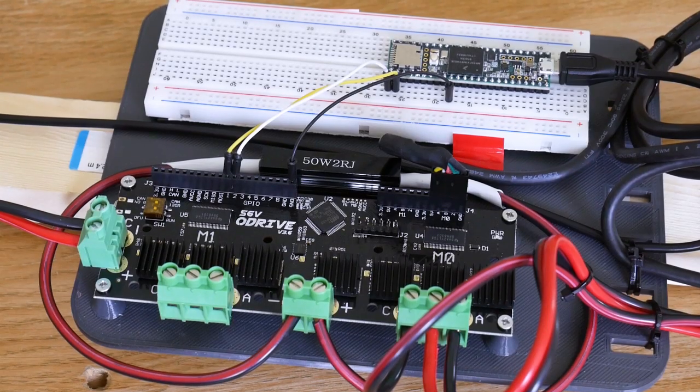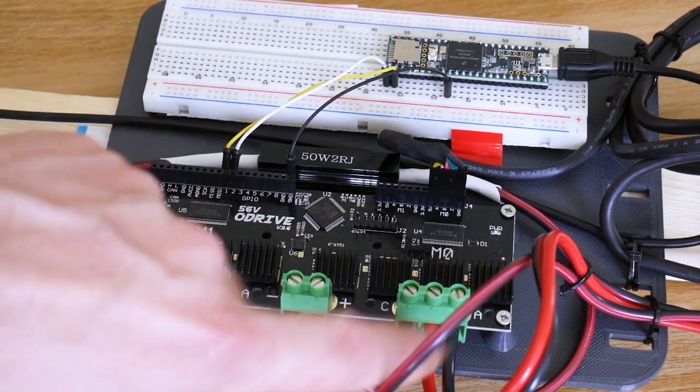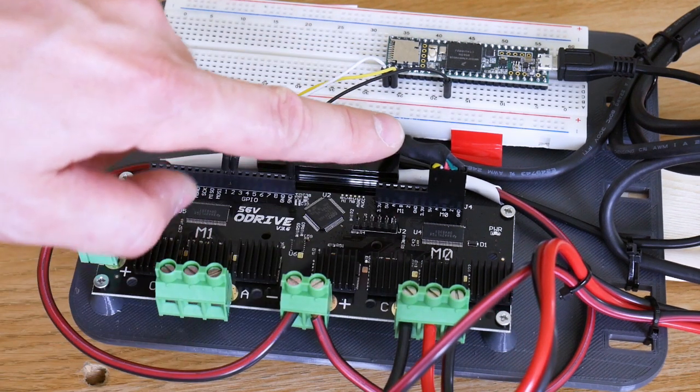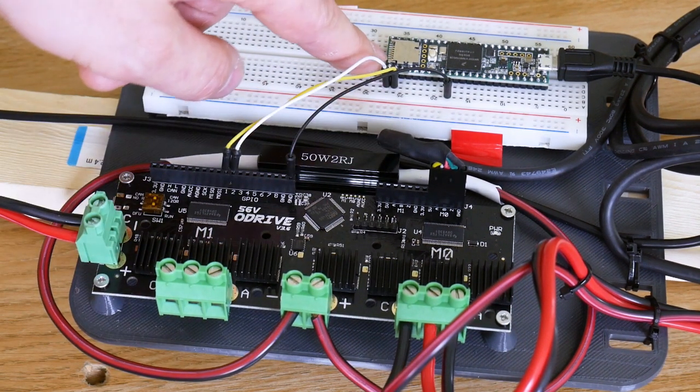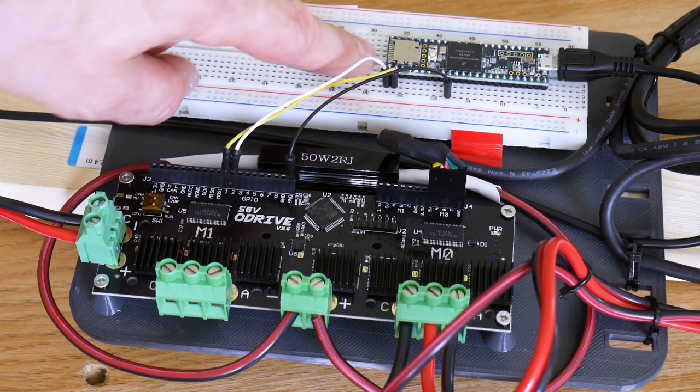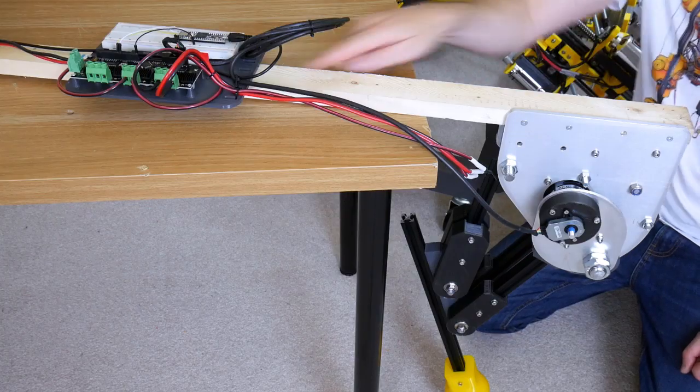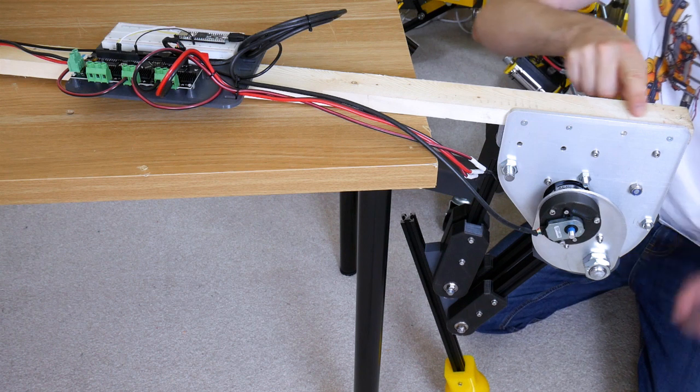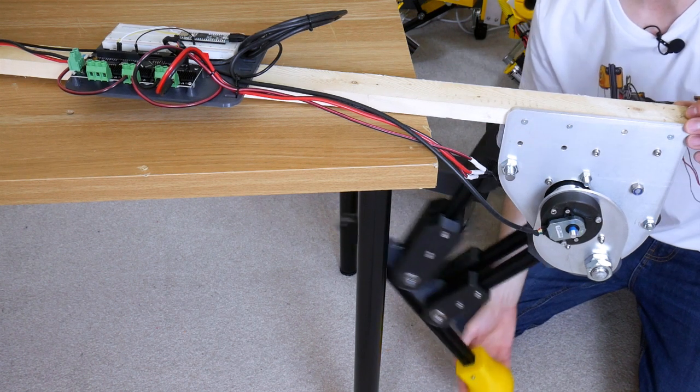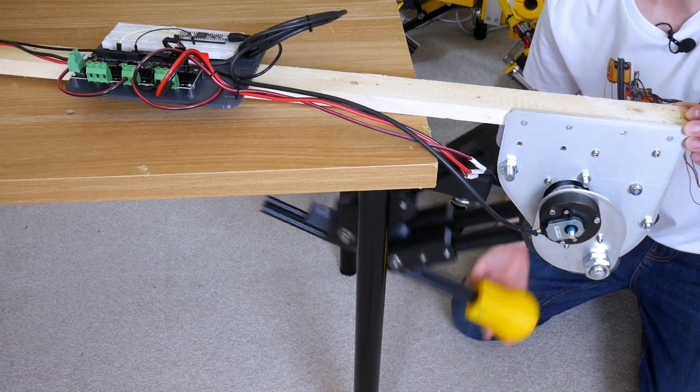To control the leg we're using an ODrive brushless motor driver with power plugged in, the encoder that goes to the encoder on the motor, and a Teensy 3.6 with some serial lines. I've screwed the leg to this long piece of wood so we can bounce it on a pivot and see how much of an elastic spring effect we get.